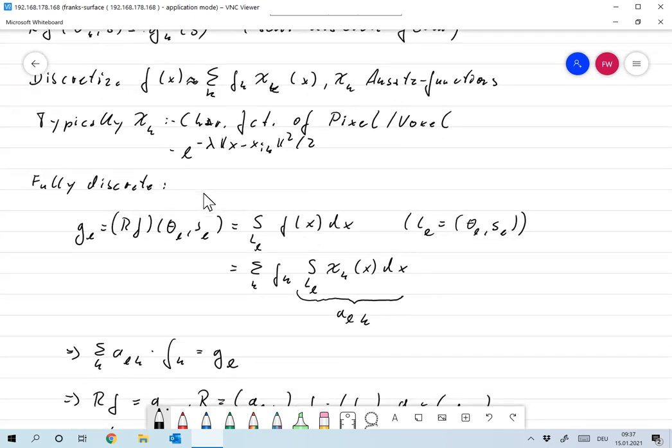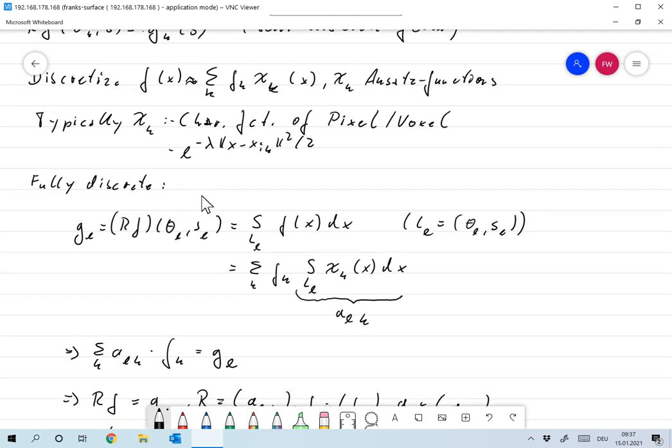Now, what does that mean for the fully discrete case? Well, we measured along the line L_L, which was defined by direction θ_L and distance S_L. So we have G_L as RF of θ_L and S_L. And that's the integral over L_L, F of X, DX,